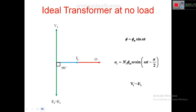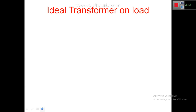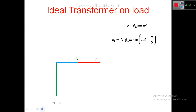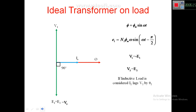Next, coming to the ideal transformer on load. Flux phi is the reference, Ie is in phase with flux phi. From the EMF equation, E1 and E2 are 90 degrees lagging from flux phi, and V1 equals minus E1, which is exactly 180 degrees apart from E1. Since this is an ideal transformer, E2 equals V2. Considering an inductive load, current I2 is lagging V2 by angle theta2.